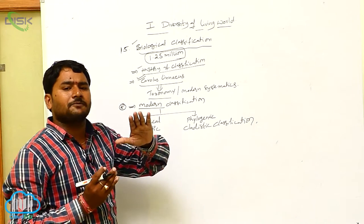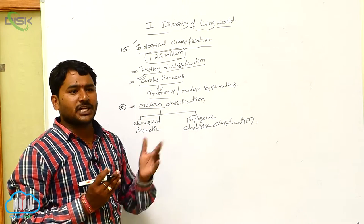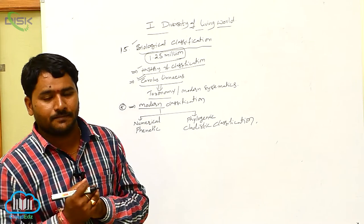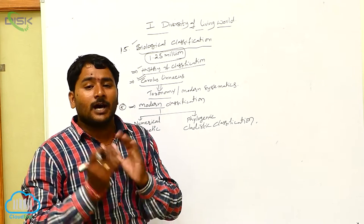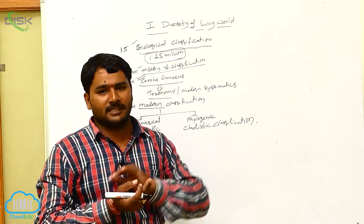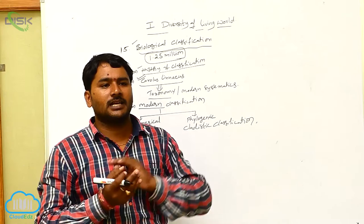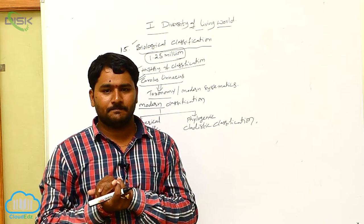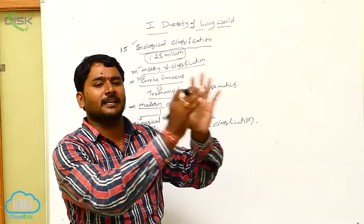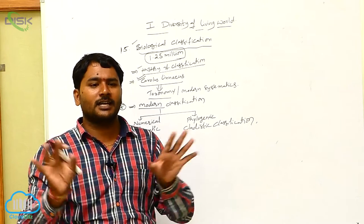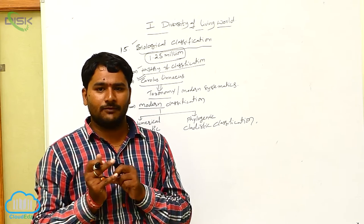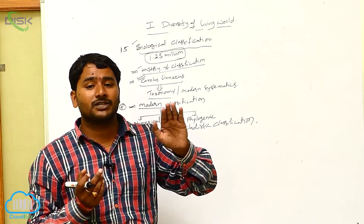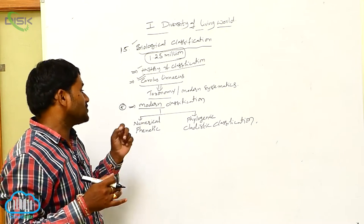Artificial classification was proposed by ancient scientists like Aristotle, who classified animals based on their external characters. Organisms that looked similar were kept in a single category. For example, butterfly, bird, and bat were grouped together — but butterfly is an insect, bird is an ave, and bat is a mammal. That is why this classification was not accepted, and natural classification came into progress.